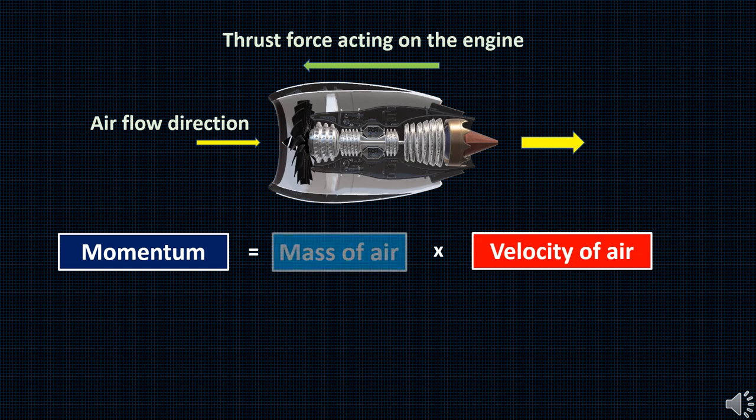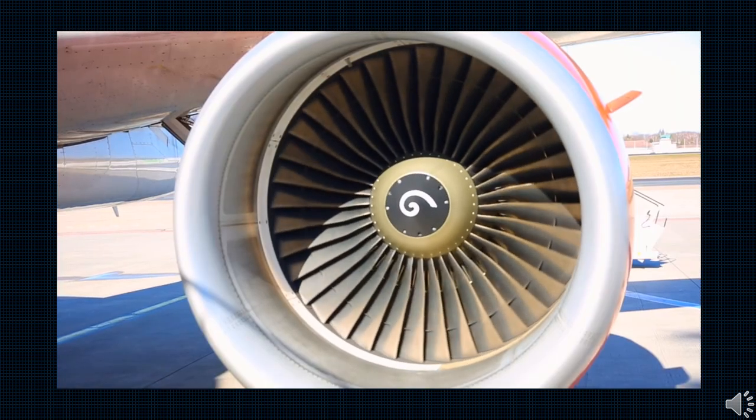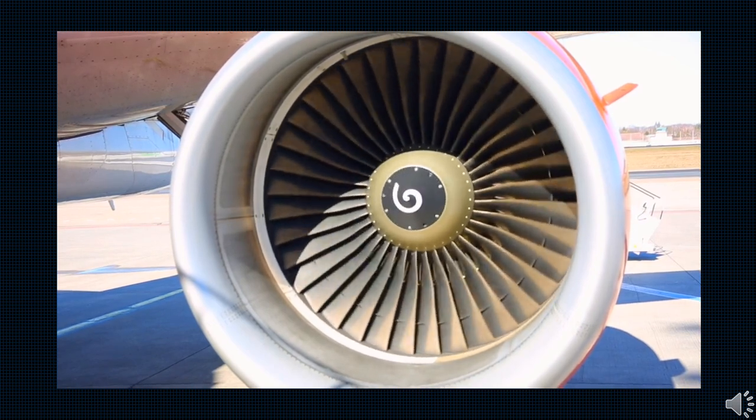This enormous increase in the mass flow rate is attained using the fan in turbofan engines, which sucks in more air and increases the mass flow rate.